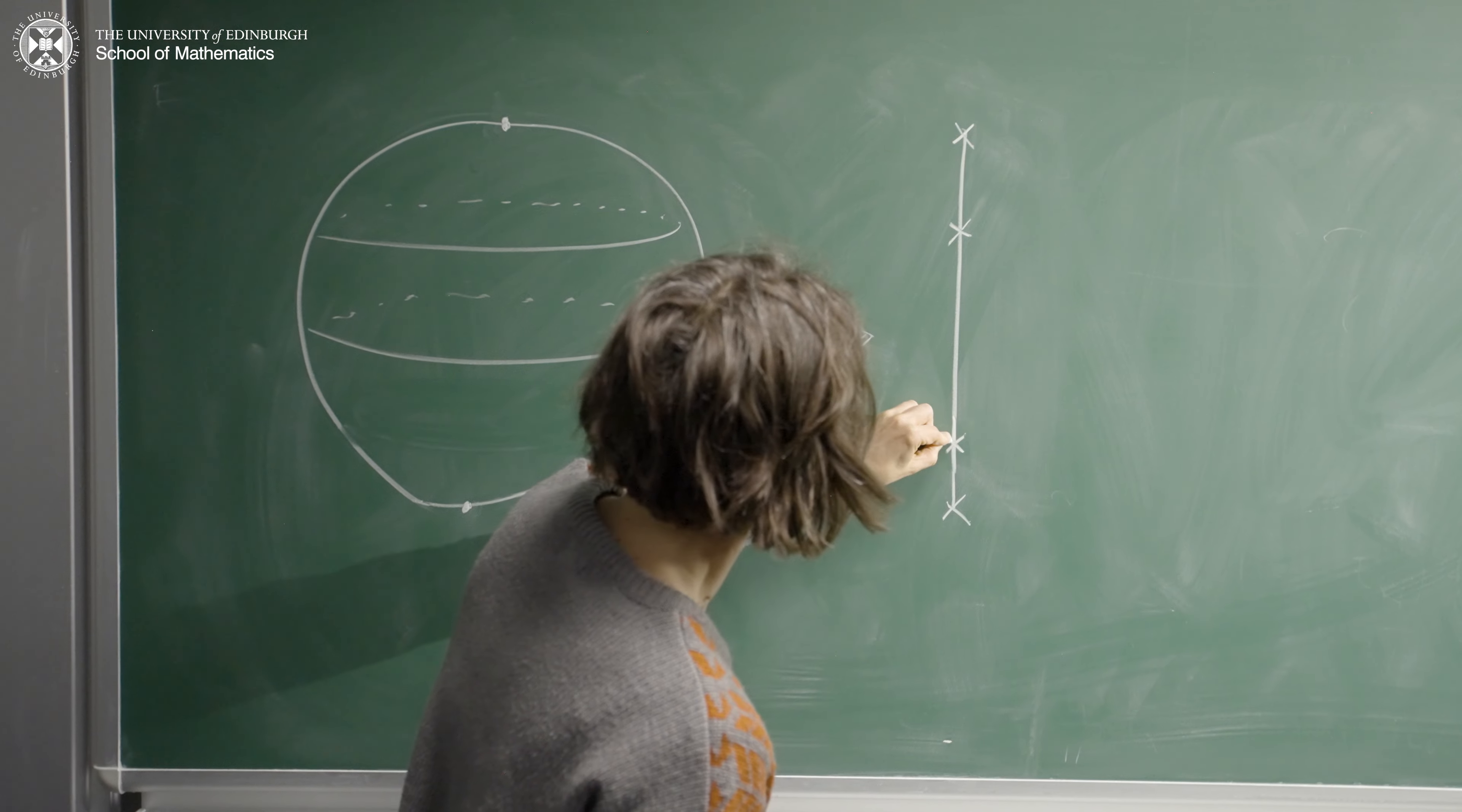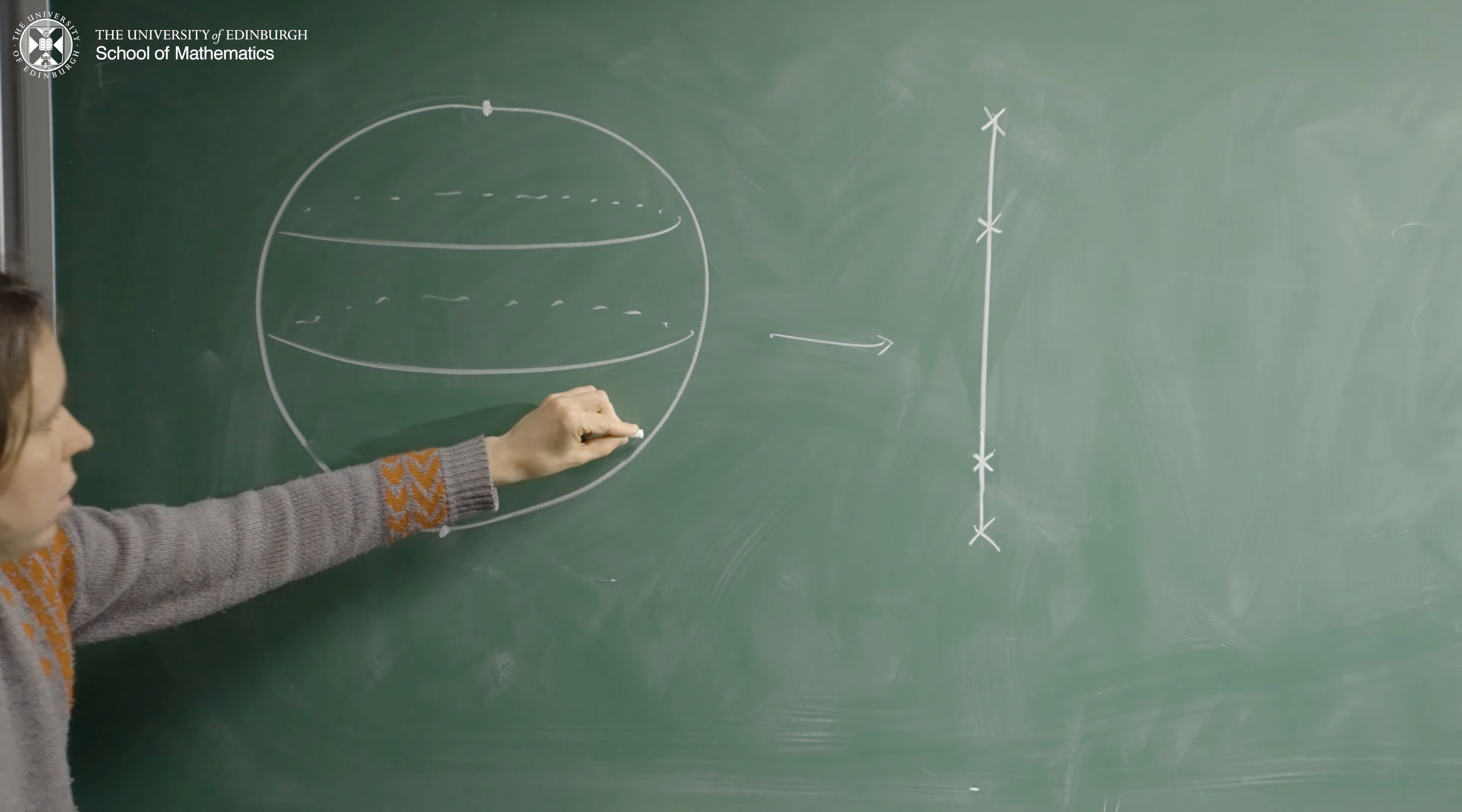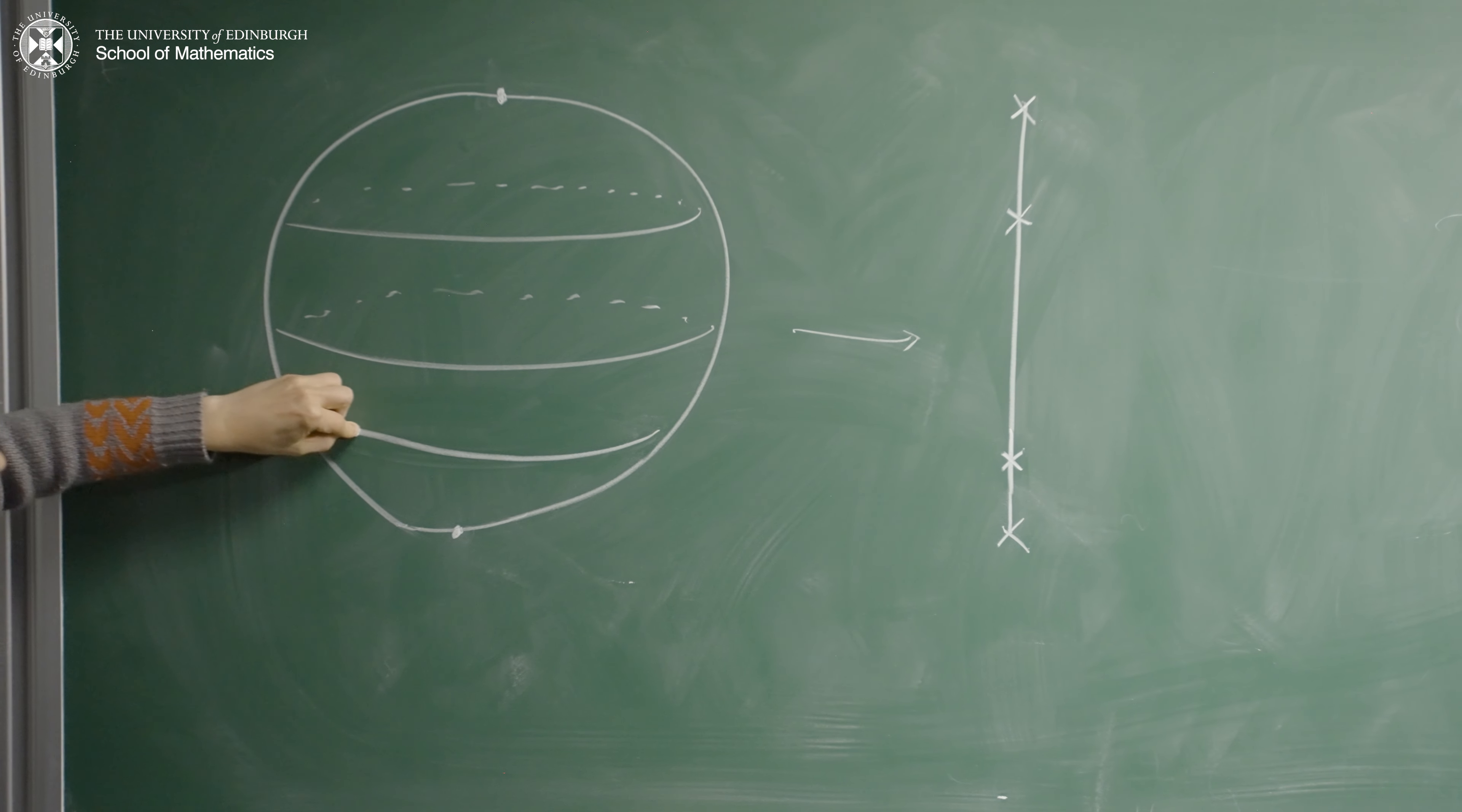So you have this abbreviated representation that has half the number of dimensions of your real space. And you can use the abbreviated representation to study the underlying space.